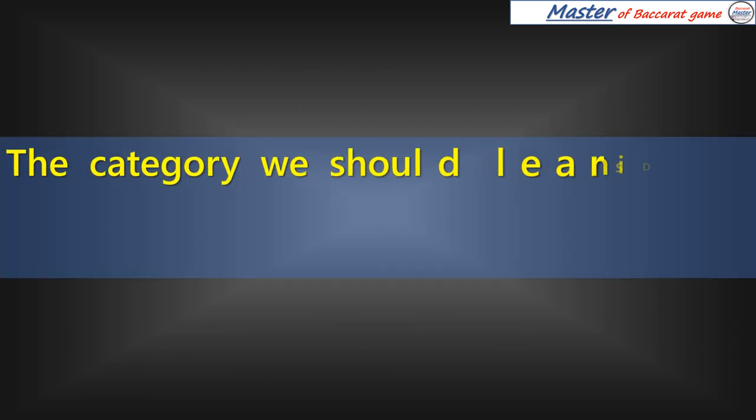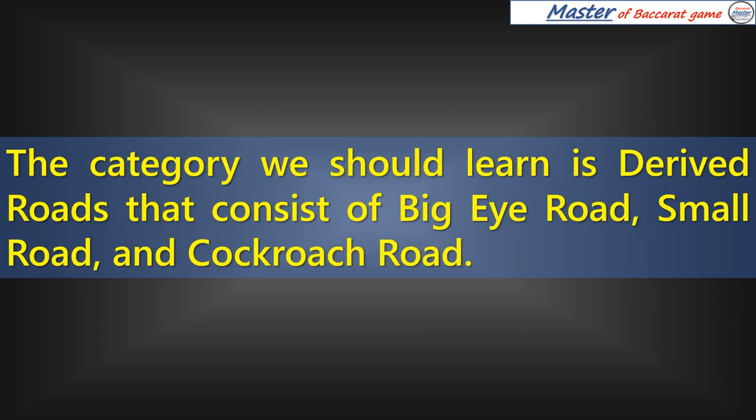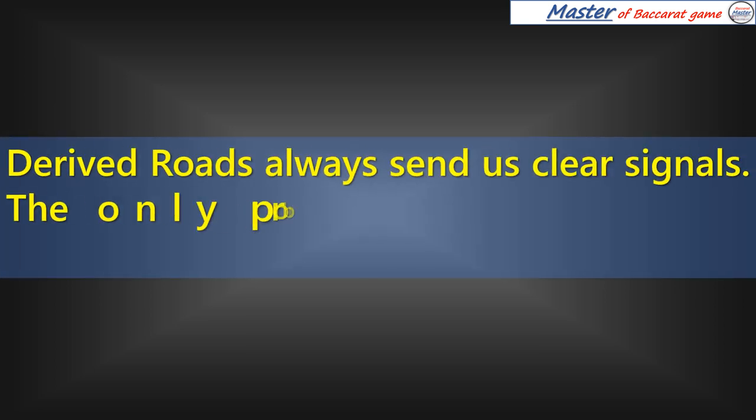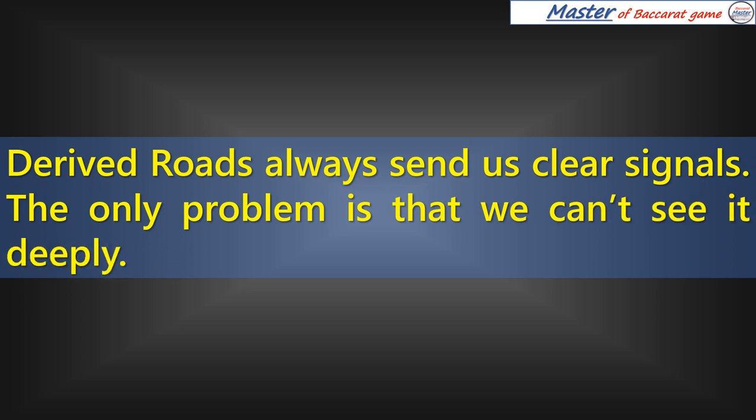The category we should learn is Derived Roads that consist of Big Eye Road, Small Road, and Cockroach Road. Derived Roads always send us clear signals. The only problem is that we can't see it deeply.